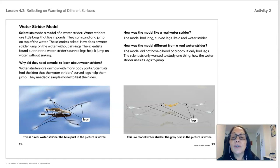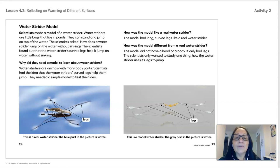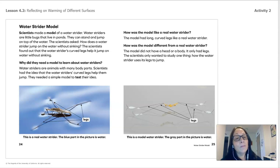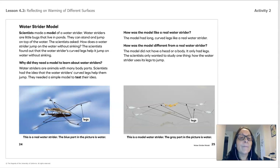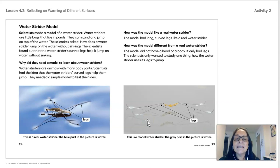Why did scientists need a model to learn about water striders? Water striders are animals with many body parts. Scientists had the idea that the water strider's curved legs helped them jump, so they needed a simple model to test that idea. The model had long curved legs like a real water strider, but it did not have a head or a body — only legs. The scientists only wanted to study one thing: how the water strider uses its legs to jump.